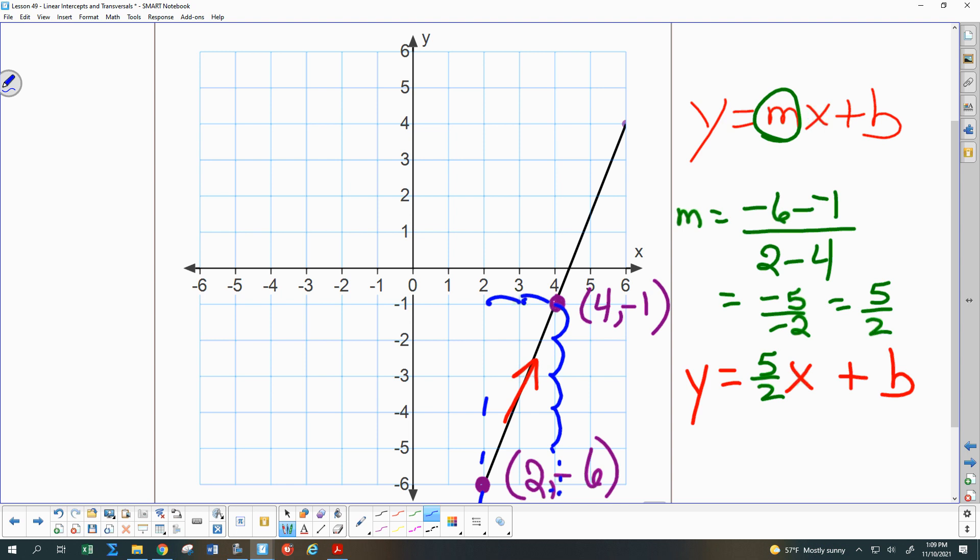Okay. So we're at y equals 5 halves x plus b. How the heck can I figure out what b is? Can somebody help me come up with an approach that might work for figuring out what b needs to equal? Kevin? I can plug in either one of those points, either the 4, negative 1, or the 2, negative 6. But I'm with you. 4 and 1 are smaller numbers, so I think I'll go with those.